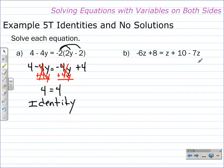In part B, we need to solve this equation. On the left-hand side, there's nothing to do, so we've copied down negative 6z plus 8. On the right-hand side, we combine like terms: z minus 7z is negative 6z, and we bring down the plus 10.